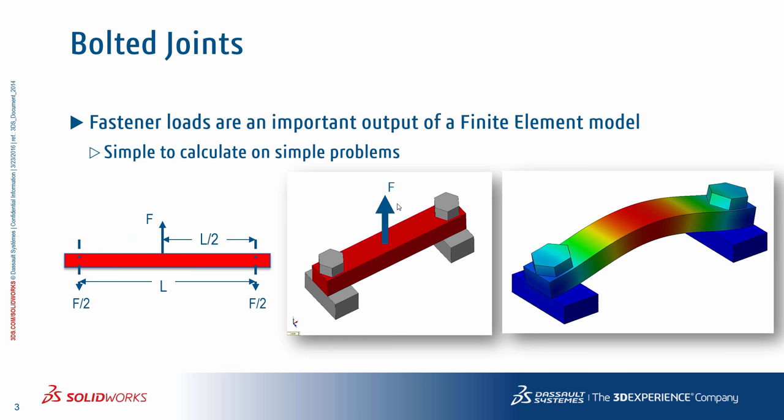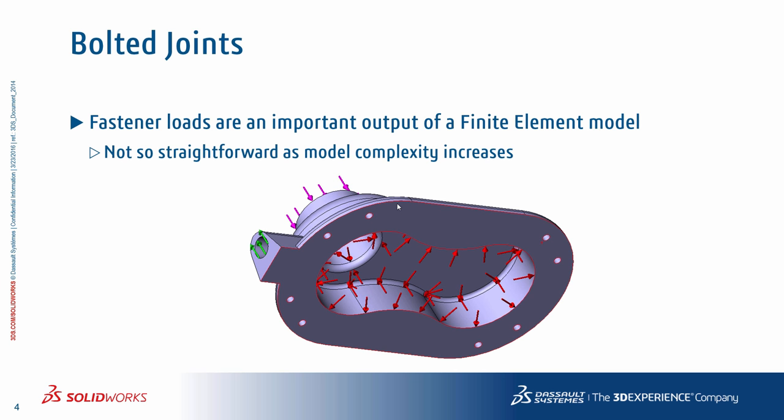Bolted joints are an important aspect of many assembly modeling problems. In most cases, for simple problems, they can be calculated using a free body diagram or simple hand calculations. However, as the geometries and fastener schemes become more complex, especially when complex loading gets involved, calculating fastener loads like the bending, shear, and axial loads become significantly more difficult. This is where using a finite element technique in SOLIDWORKS Simulation to calculate the bolt loads becomes very important in the design process.